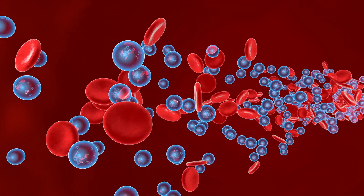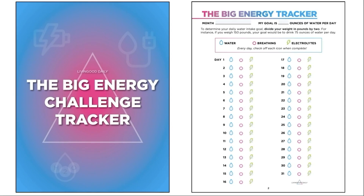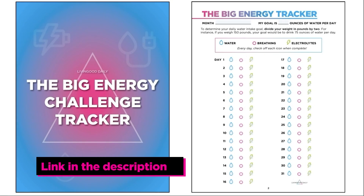That is exactly why I created the Big Energy Challenge Tracker. It is as simple as it sounds — each day you track your water and your breathing. Each day, drink half your body weight in ounces of water and color it in or check it off. Do one to three rounds of one-minute breathing exercises and check it off. Ingest your electrolytes daily and check it off — it counts toward your water total.